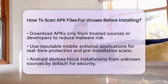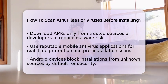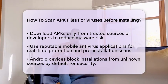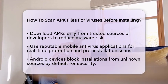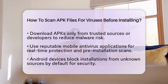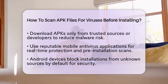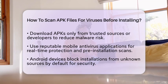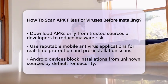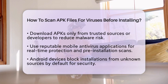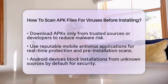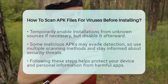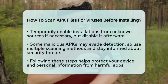Additionally, remember that Android devices block installations from unknown sources by default. This feature is there to prevent unauthorized apps from being installed. If you need to install an APK manually, you can temporarily enable the option to allow installations from unknown sources. Just remember to disable it again after the installation to keep your device secure.